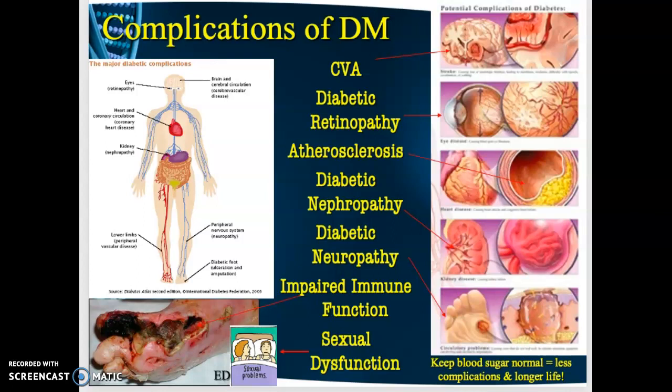This is part two of our lecture on diabetes. In part one we ended talking about the complications of diabetes — diabetics have a higher incidence of strokes, retinopathy, blindness, atherosclerosis, and nephropathy.